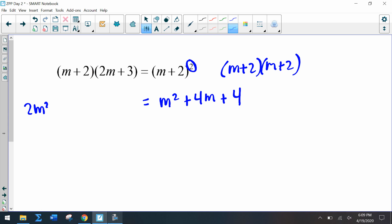And then we have 2m² outer, we have + 3m and then + 4m, and then + 6.